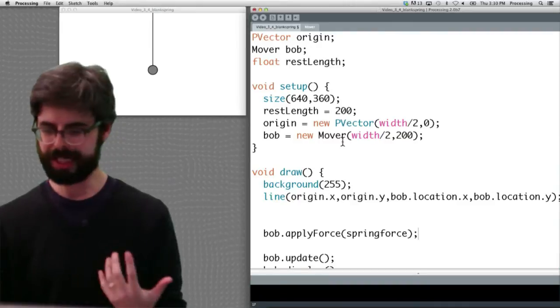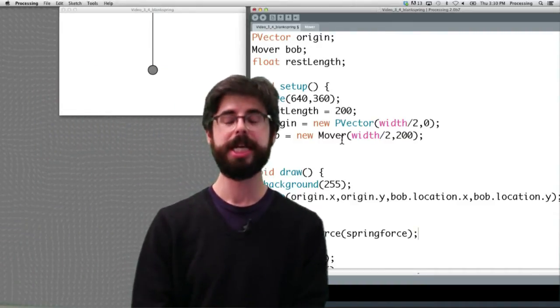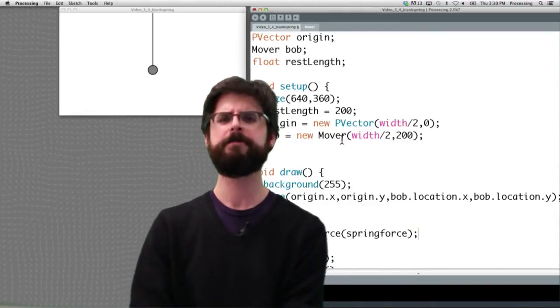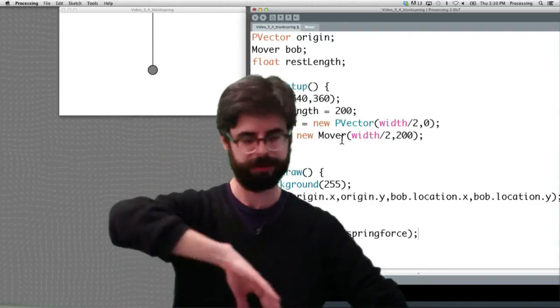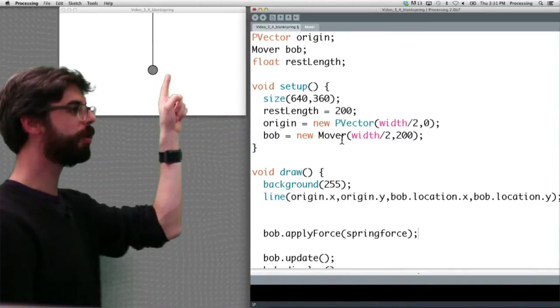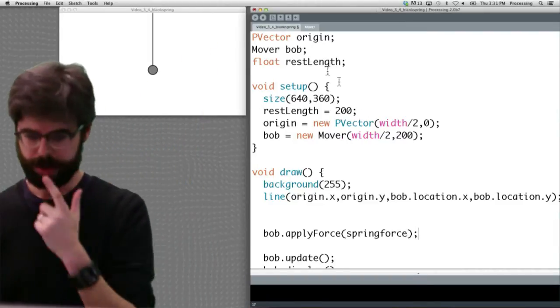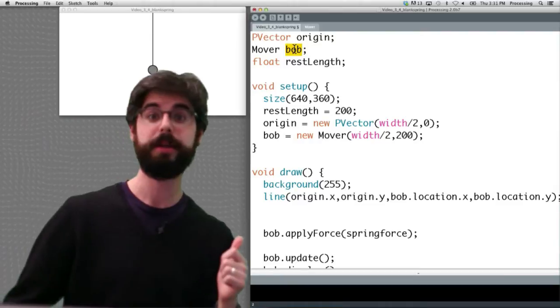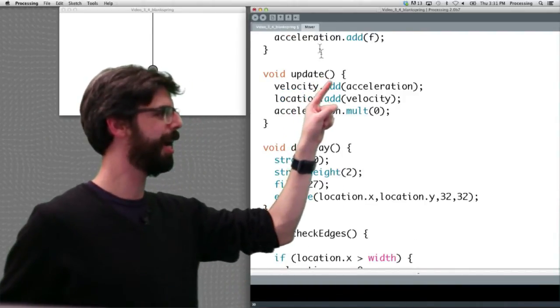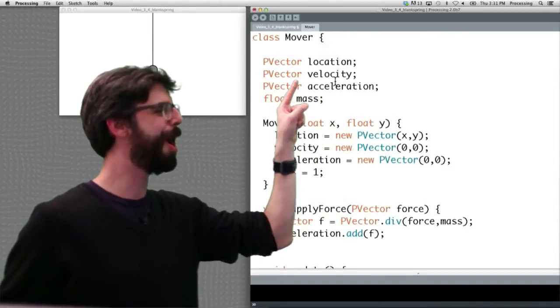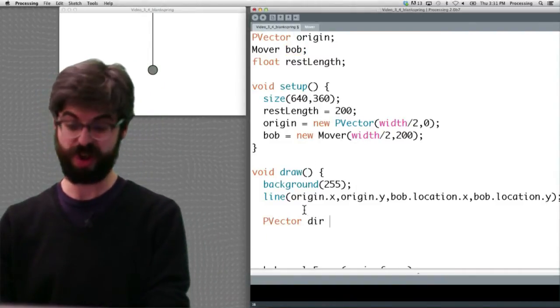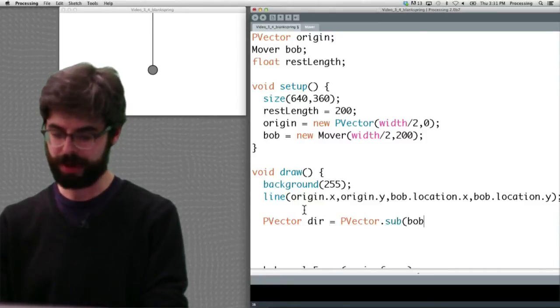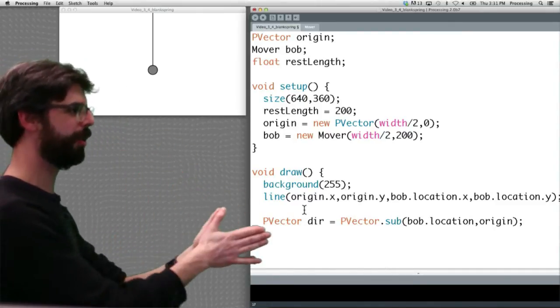We're eventually just going to say bob dot apply force, spring force. This is what we're looking to do. We need to calculate that spring force and then apply it to our object. So let's remind ourselves, the magnitude of the force is negative some constant times the displacement. Let's look at the direction of the force. A force points from the bob to the origin. So origin is a vector, that's its location. Bob is a mover and the bob's location is a vector inside of the mover class. So we can make a vector, I'm just going to call it direction, which equals, I'm going to subtract the bob's location minus the origin.